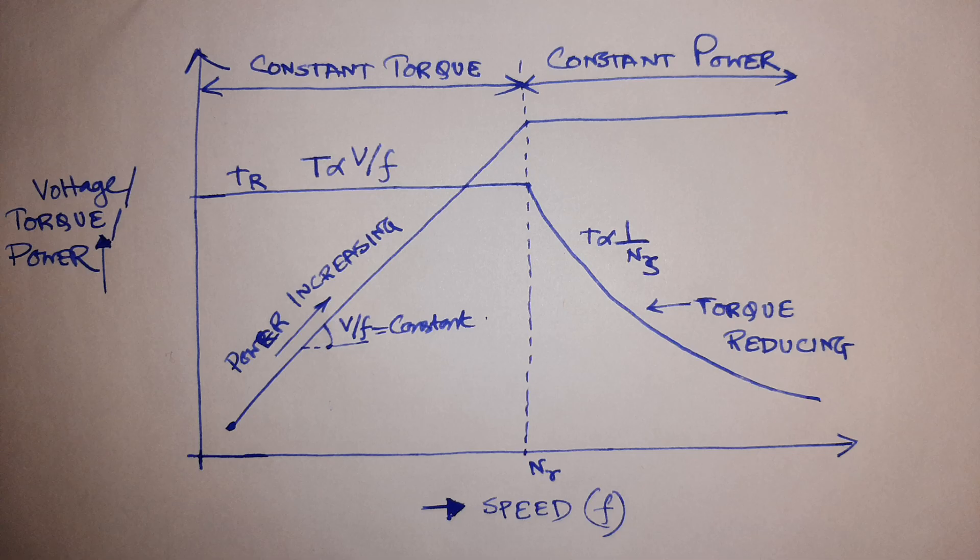In this graph we can see the relation between torque and power and how they are adjusted in VFD. On the x-axis, the speed is plotted, or the frequency, because speed is proportional to frequency. On the y-axis we have plotted voltage, torque, and power.